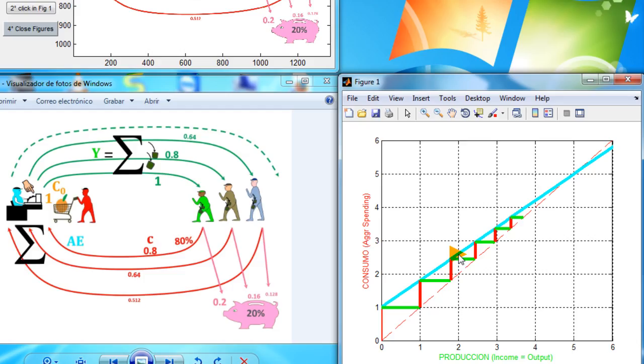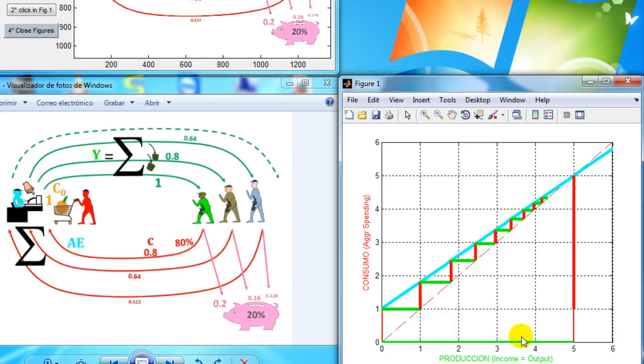So what we get is that in equilibrium, which is this point, aggregate expenditure is equal to income. But here we can see that this $1 is the initial consumption, and this $4 is the induced consumption, induced by this initial consumption. So we have 1 plus 4 is 5. This $5 aggregate expenditure in equilibrium is equal to this $5 income.